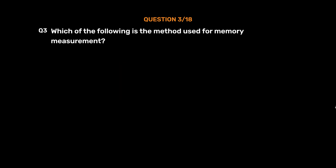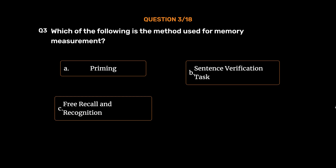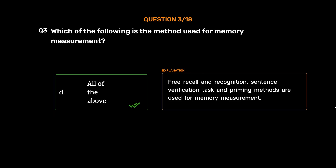Question number 3. Which of the following is the method used for memory measurement? Option A: Priming. Option B: Sentence Verification Task. Option C: Free Recall and Recognition. Option D: All of the above. The correct answer is Option D, All of the above. Free Recall and Recognition, Sentence Verification Task, and Priming methods are all used for memory measurement.